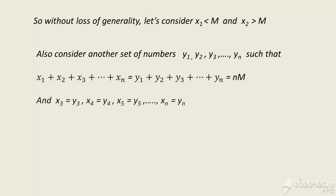We consider another set of numbers y₁, y₂, y₃, …, yₙ such that the sum x₁ + x₂ + … + xₙ = y₁ + y₂ + … + yₙ, and x₃ = y₃, x₄ = y₄, …, xₙ = yₙ. We set y₁ = x₁ + k = M, meaning we increase x₁ by a positive constant k to make it equal to M.